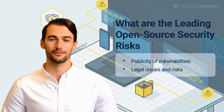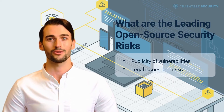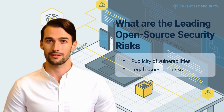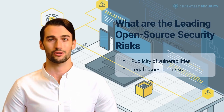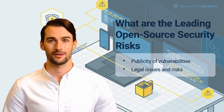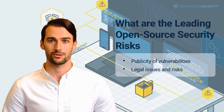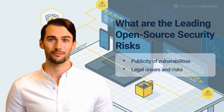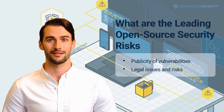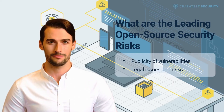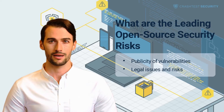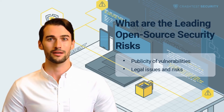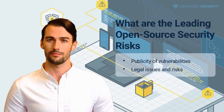Publicity of Vulnerabilities. Vulnerabilities to open-source software are announced publicly by organizations such as the National Vulnerability Database and the Open Web Application Security Project, as well as by developers and contributors to the open-source community. While there are advanced notices for community members before vulnerabilities are made public, this doesn't guarantee that vulnerabilities won't be exploited, nor does it mean that everyone will implement patches and fixes on time. This inconsistency creates openings in security and leaves vulnerable components open to attacks.